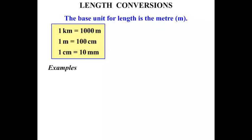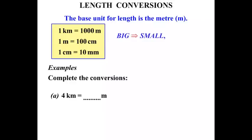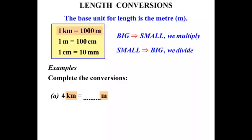Let's look at some examples. We're asked to complete the conversions. The first one: four kilometers equals how many meters? A couple of things to think about — if we're changing from a bigger unit to a smaller unit, we multiply. If we're changing from a smaller unit to a bigger one, we divide. We're dealing with kilometers and meters, and from our table we know one kilometer equals a thousand meters, so we'll be working with a factor of a thousand.